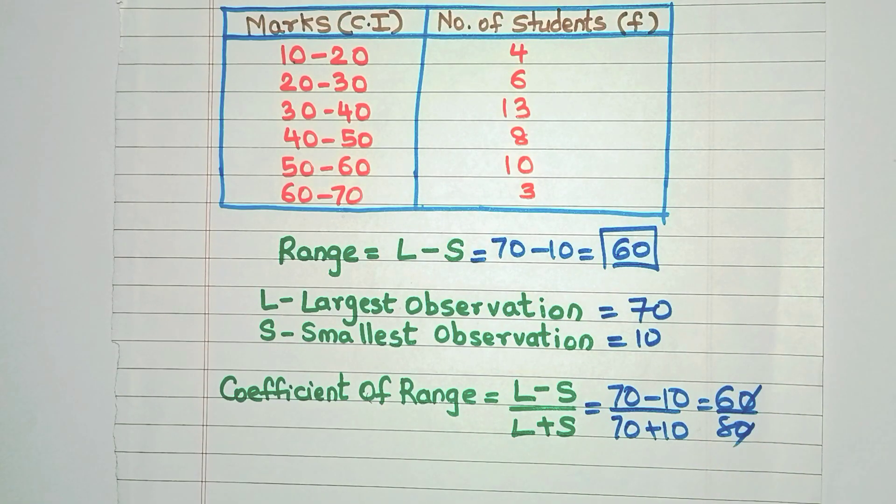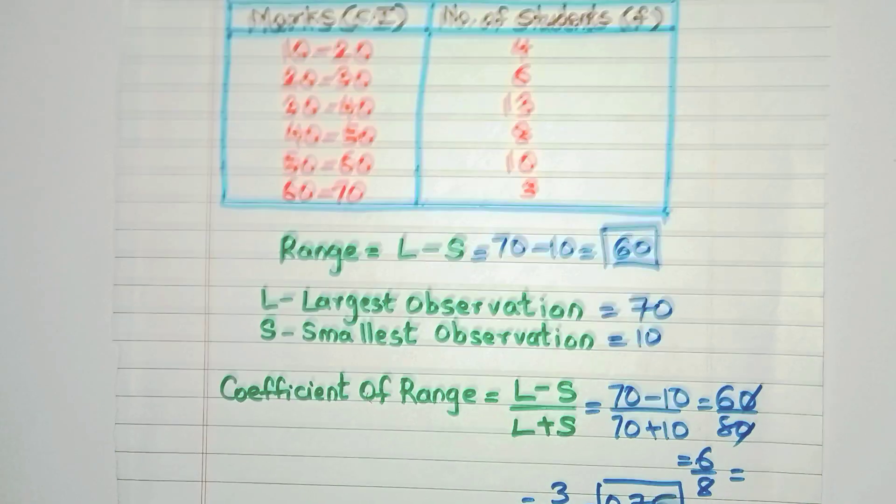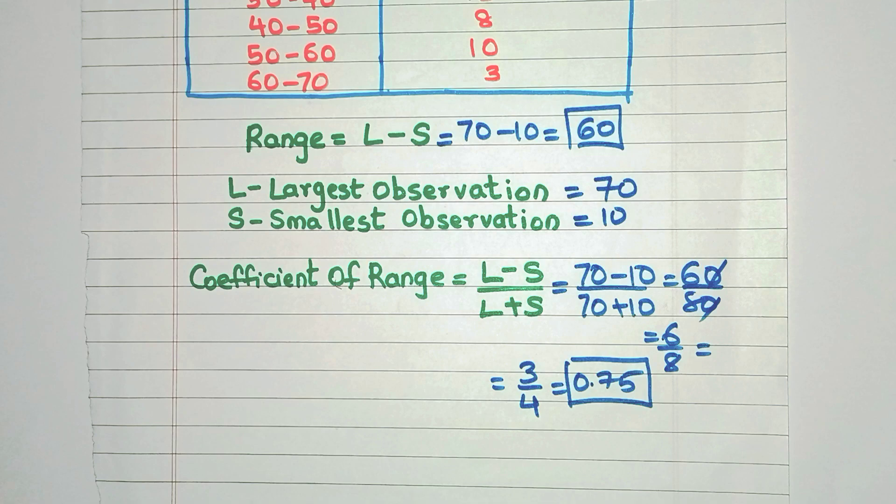Now we can take out the zeros. 6 by 8 and this will go in two stables. So we will get 3 by 4 which is 0.75. So the coefficient of range over here is 0.75.